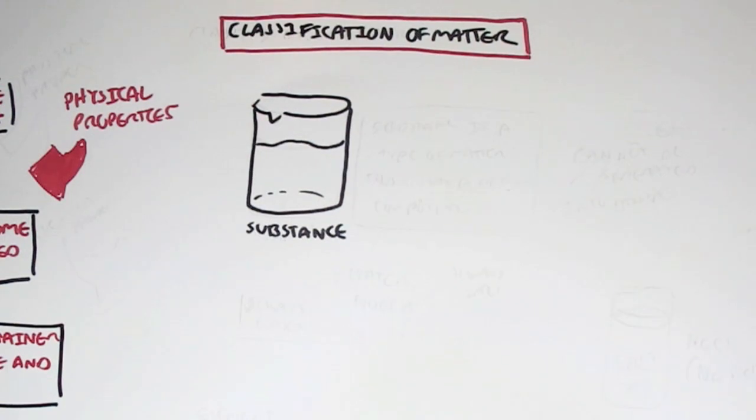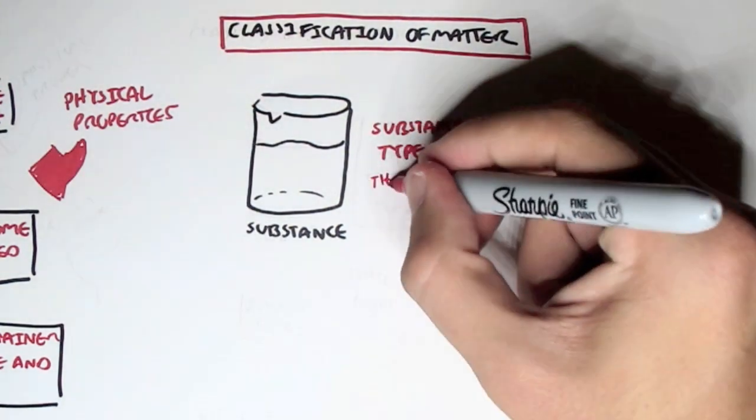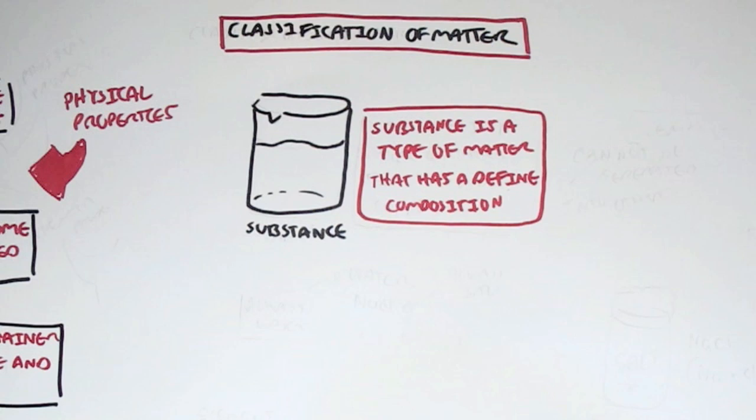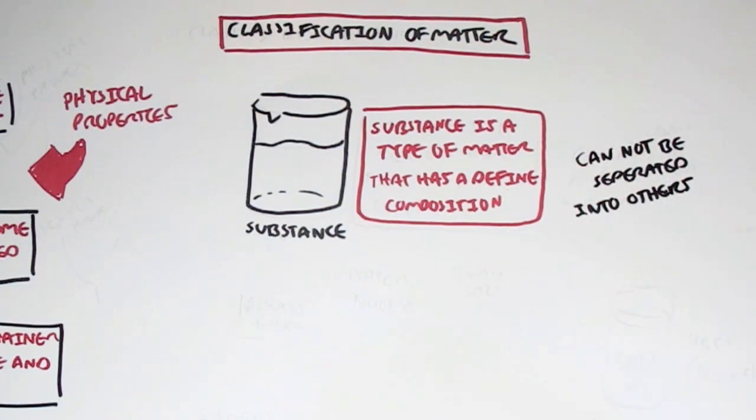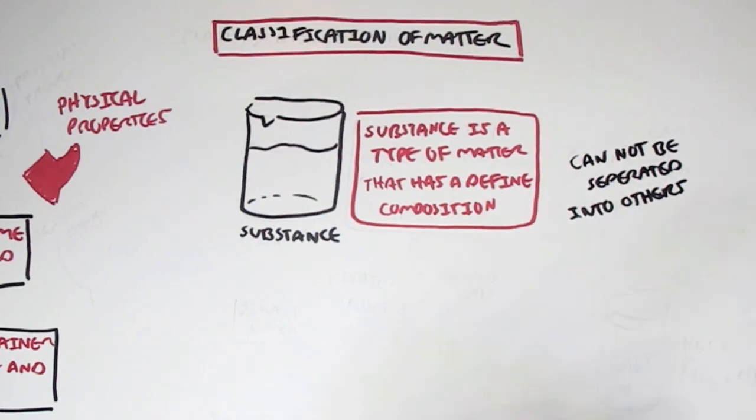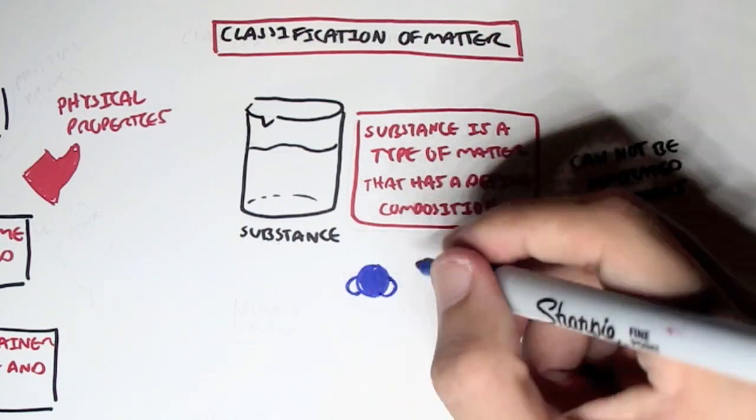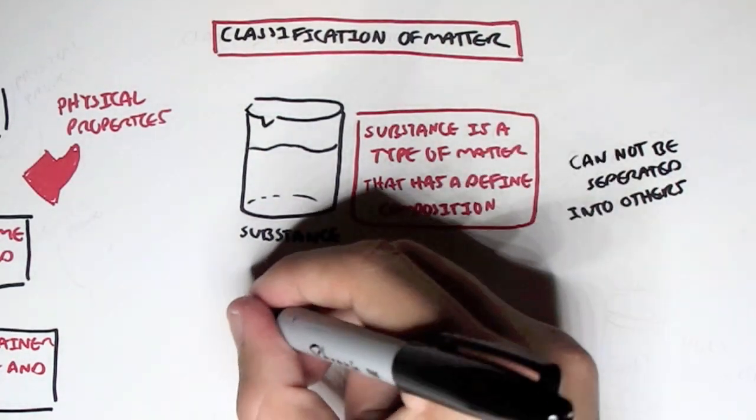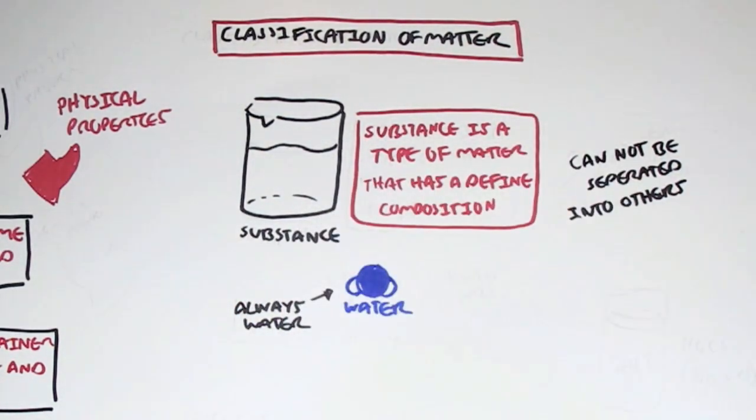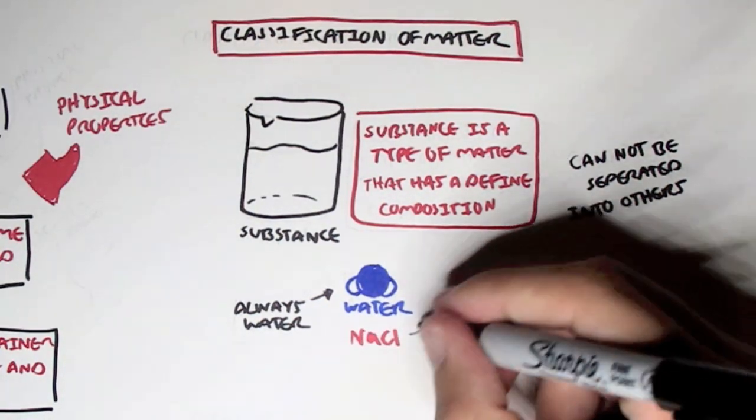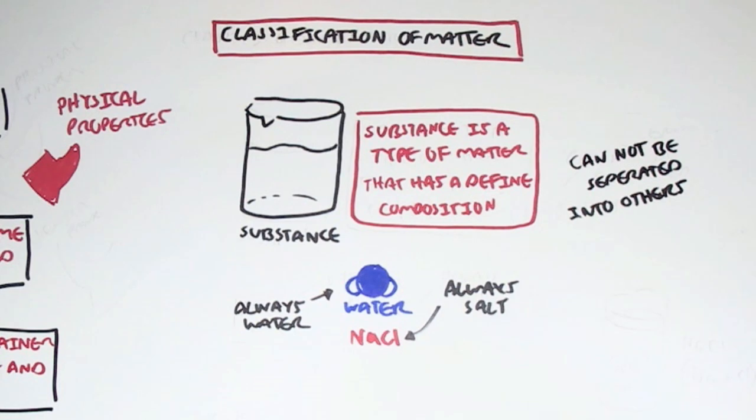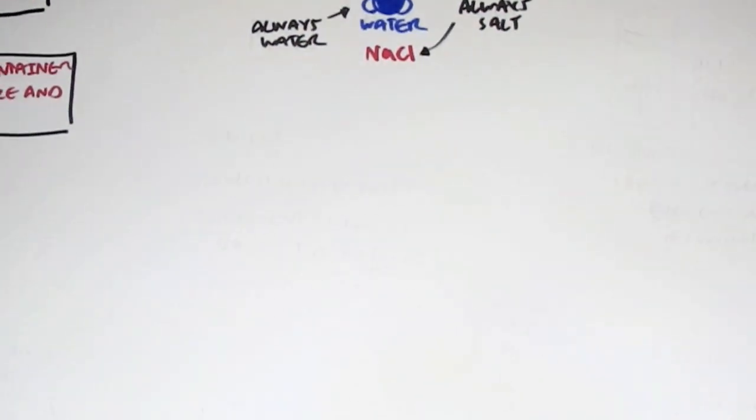Now matter can also be classified, classification of matter. A substance, for example, is a type of matter that has a defined composition and cannot be separated into other things. For example, water is a substance. Water is always water. NaCl, sodium chloride or salt is always salt. An element is the simplest form of a substance. So remember, an element is the simplest form of a substance.